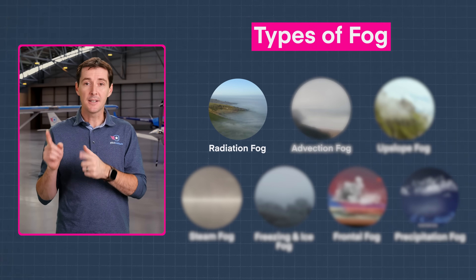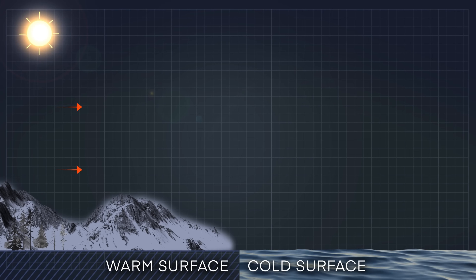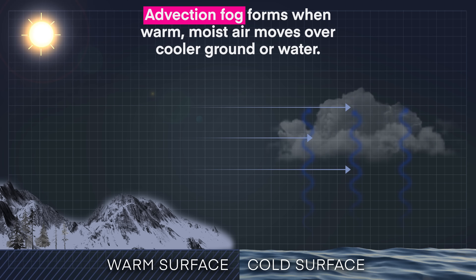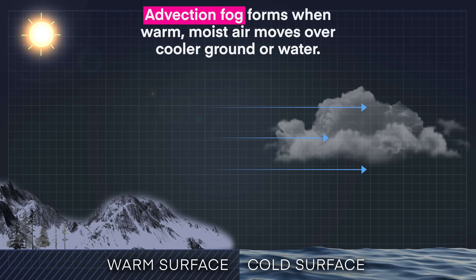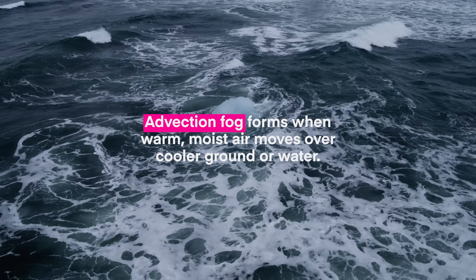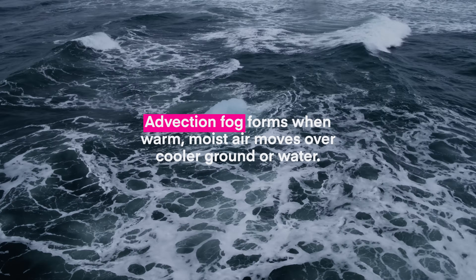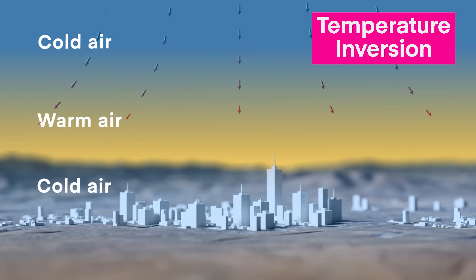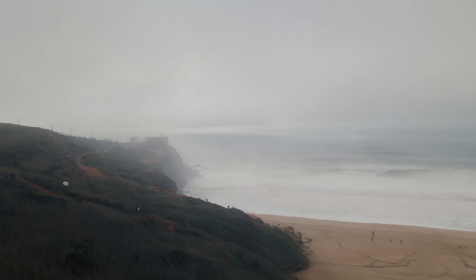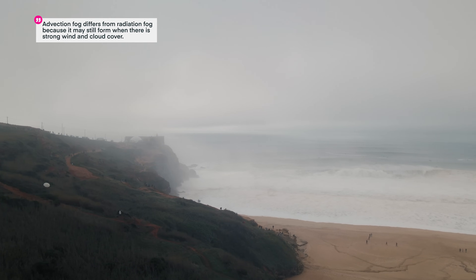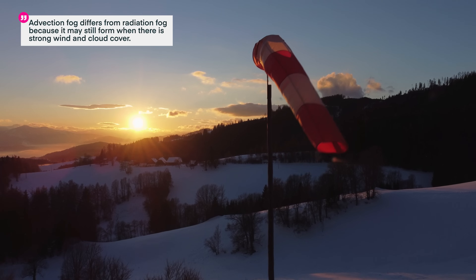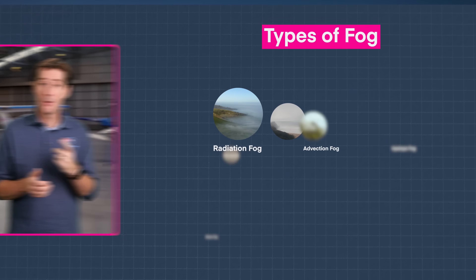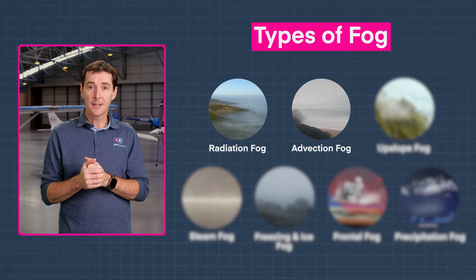The next type of fog is called advection fog. Advection fog forms when warm and moist air moves over a cooler ground or over water. It is relatively shallow and often associated with a temperature inversion. Unlike radiation fog, advection fog can actually form with strong winds and also with cloud cover.